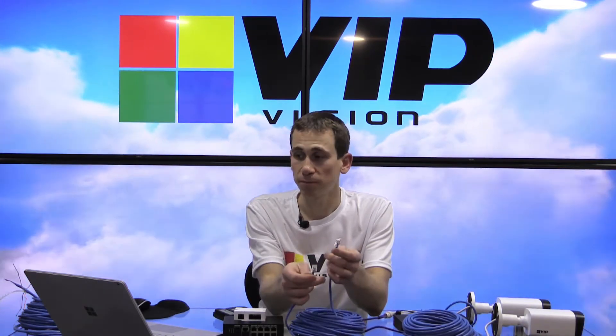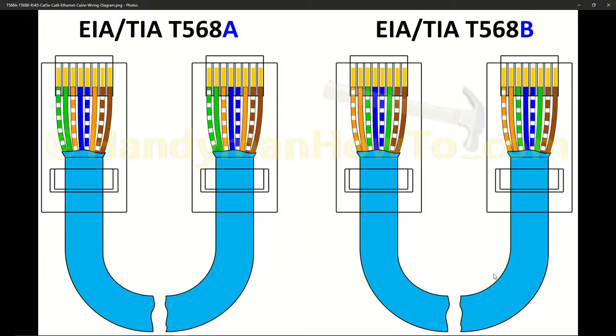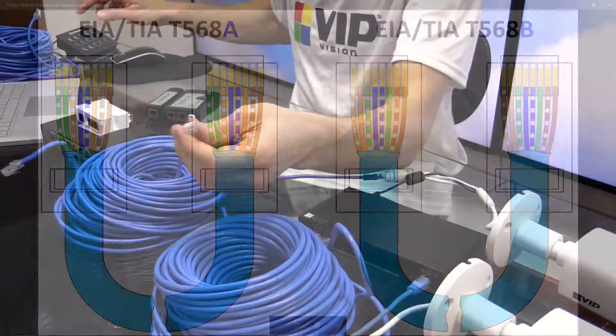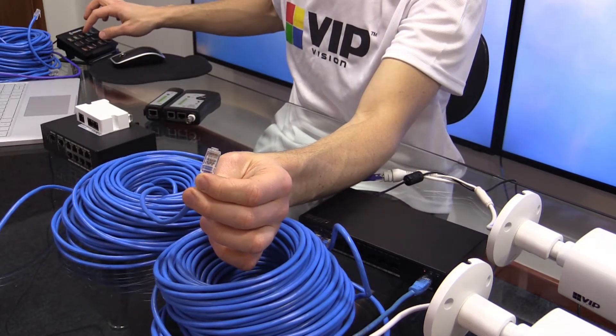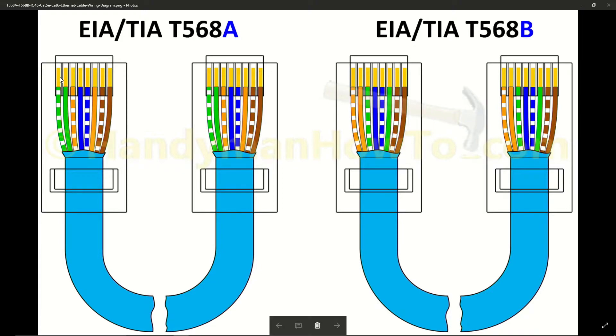The next thing we need to check is to make sure our cable is actually terminated correctly — meaning the pairs inside the cable are in the correct order. There's a very specific order for this. The standards are called T568, and we need to make sure we've got them in the correct order. There are two options: 568A or 568B. For 568A, looking from the pin side, the order is: green-white, green, orange-white, blue, blue-white, orange, brown-white, brown on both sides. For 568B, it's: orange-white, orange, green-white, blue, blue-white, green, brown-white, brown on both sides. It doesn't matter which one you pick as long as you use the same standard on both ends of the cable. 568A is more common, but B works just as well.